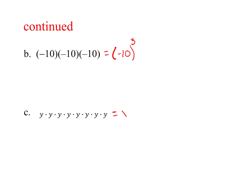Down here it's a Y. You don't have to put it in parentheses because it's just one number and it's not negative. Count how many times we have: one, two, three, four, five, six, seven, eight. So this would be Y to the eighth as our final answer.